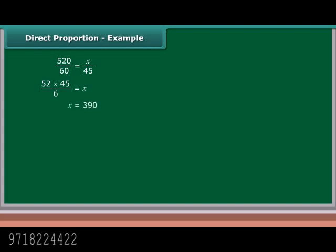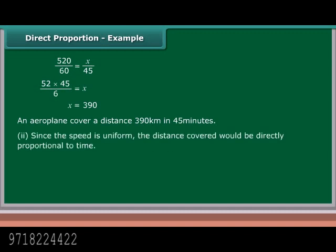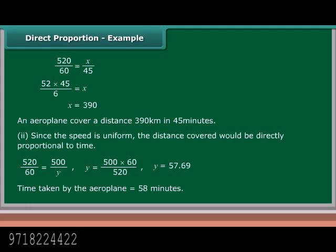An airplane covers a distance of 390 kilometers in 45 minutes. Now find the time required to cover 500 kilometers. Since the speed is uniform, the distance is directly proportional to time. 520/60 = 500/Y, so Y = (500 × 60)/520 = 57.69, approximately 58 minutes.